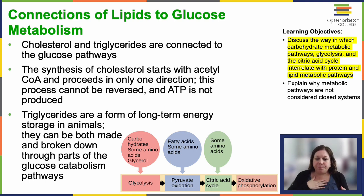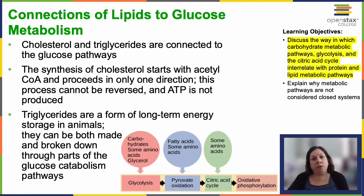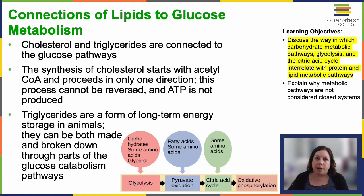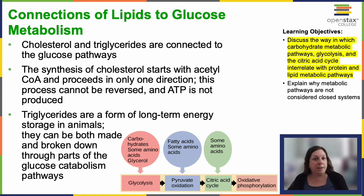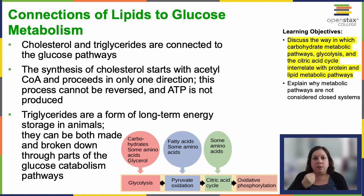Triglycerides, on the other hand, function as long-term energy storage in animals. They contain roughly twice the energy of a carbohydrate and comprise a glycerol and three fatty acids. Animals can synthesize most required fatty acids. Triglycerides can be both synthesized and broken down within the glucose catabolic pathway: glycerol enters glycolysis after phosphorylation, while fatty acids are broken into two-carbon units that join into the citric acid cycle — depending on how it's broken down, it can enter different parts of the cycle.